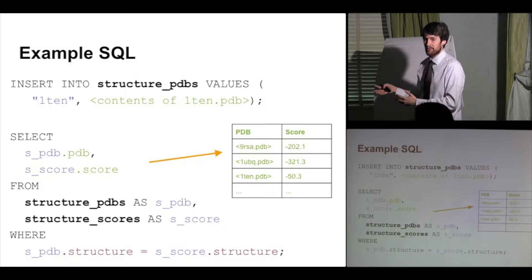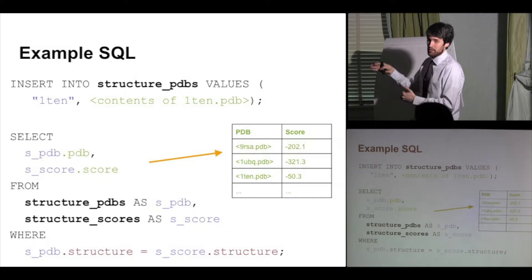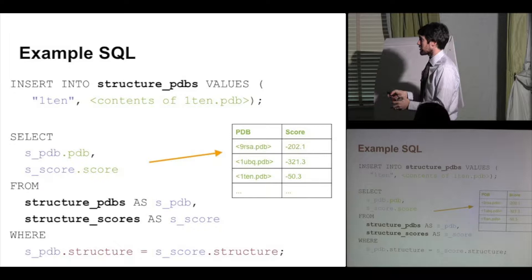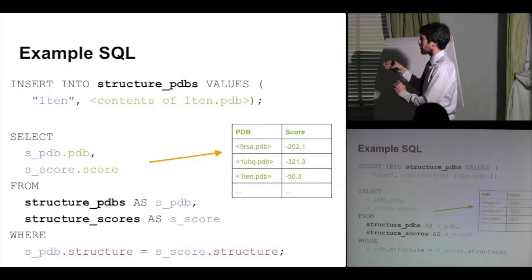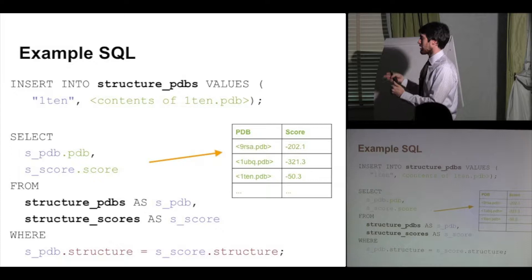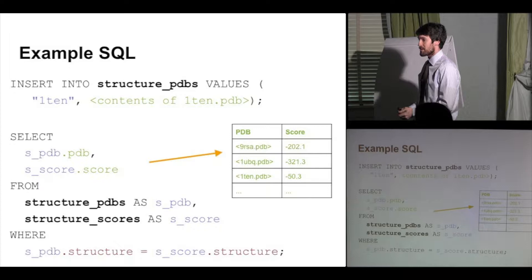SQL is a declarative language where you declare what you want rather than a procedural language where you specify how the machine should implement the query. Instead of building a Cartesian product of all columns and then filtering, it does it in a smarter way. It looks at the constraints, figures out a query plan, and then executes that plan. Different database engines do a better job at this query planning, but it can be relatively efficient.